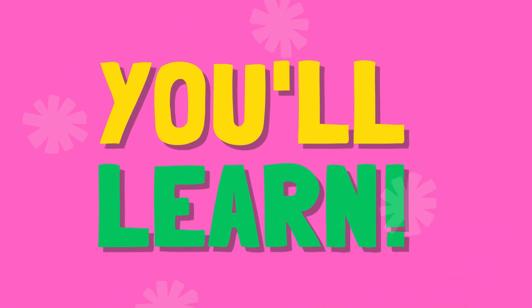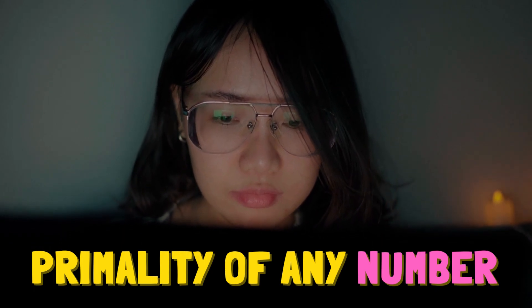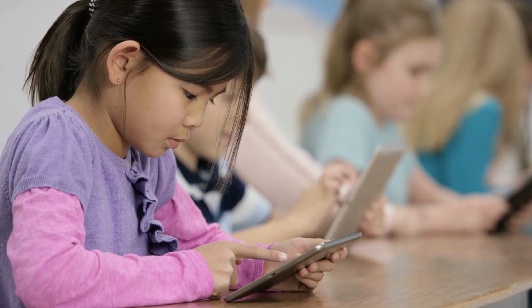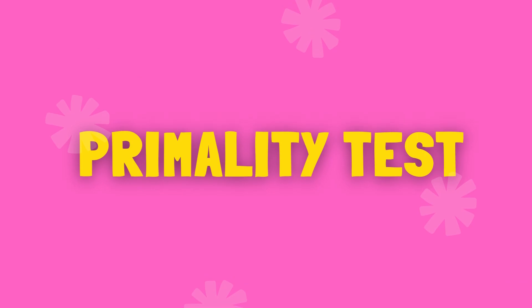In this video you will learn a program to check primality of any number. Basically, we will check whether the given number is prime. A prime number is any number that has only two factors: one and the number itself. Otherwise, the number is known as a composite number.